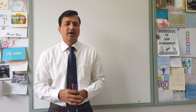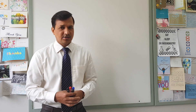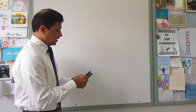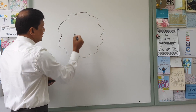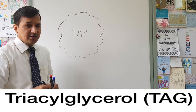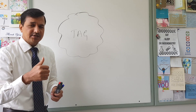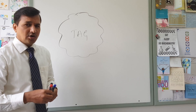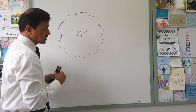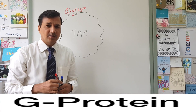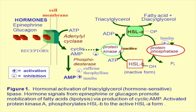I will be concentrating on how adipose tissue lipolysis is driven by glucagon, epinephrine, and cortisol. The adipose tissue stored beneath our skin contains triacylglycerol. When a person gets into a fasting condition — like two to three hours after meals — there is elevation of glucagon. This elevated glucagon goes and binds to the glucagon receptor, which is a G protein-coupled receptor, and activates adenylyl cyclase enzyme.